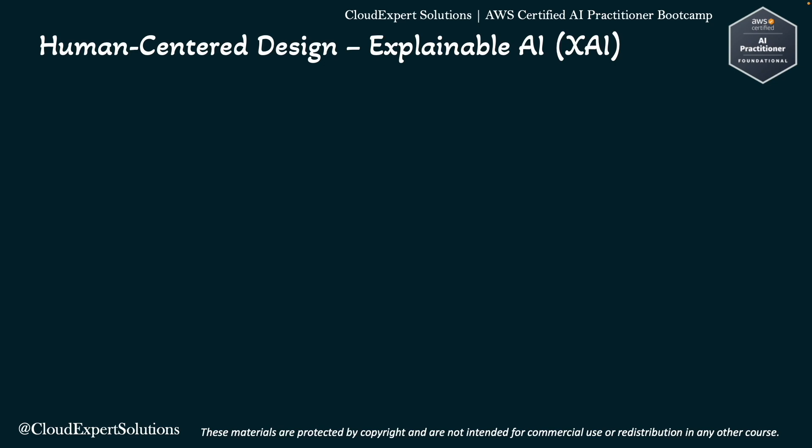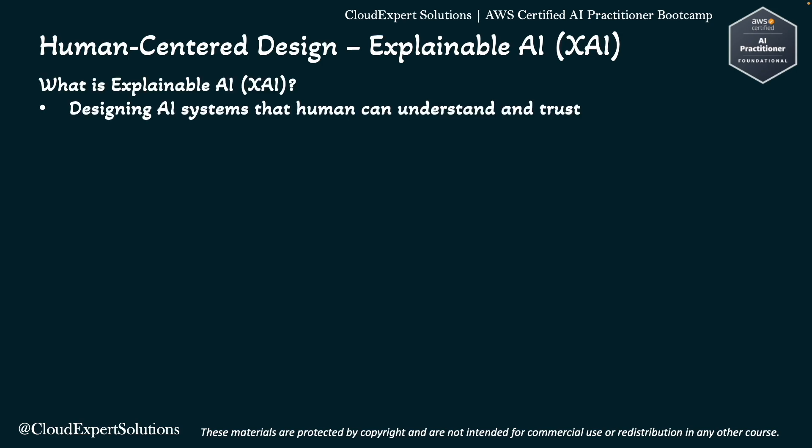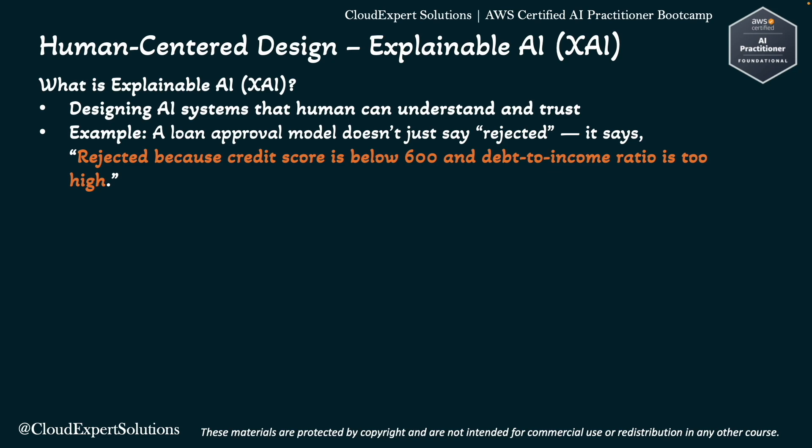Next, we are going to review Human-Centered Design for Explainable AI. Explainable AI or XAI means designing AI systems that humans can understand and trust. Instead of just saying yes or no, the AI explains why it made a decision. For example, a loan approval model does not just say 'rejected,' but should say 'rejected because credit score is below 600 and debt-to-income ratio is too high.'